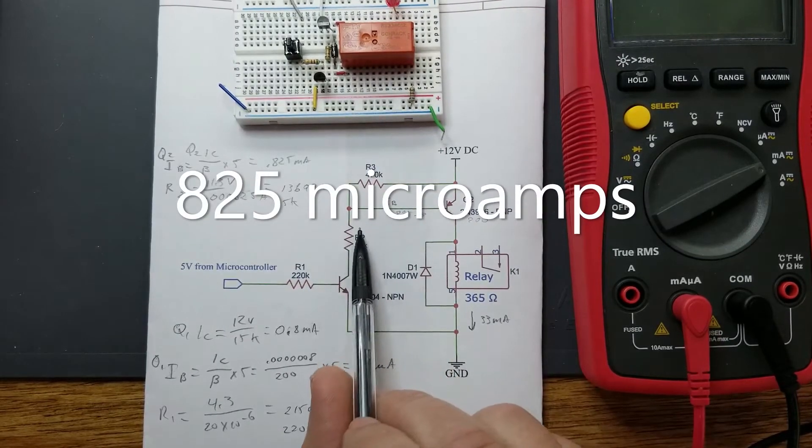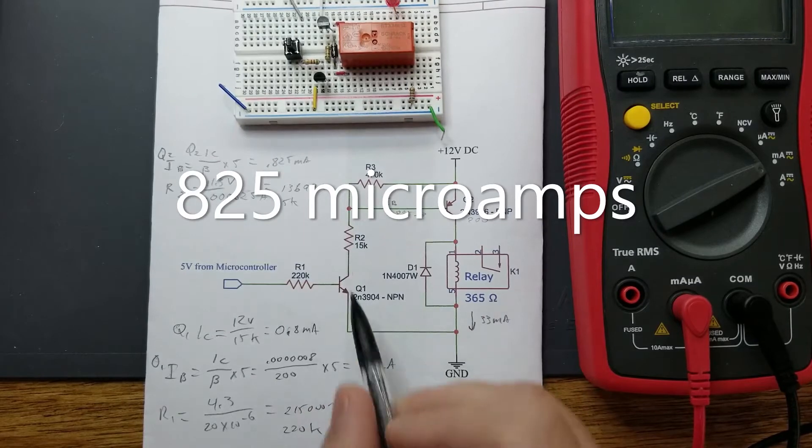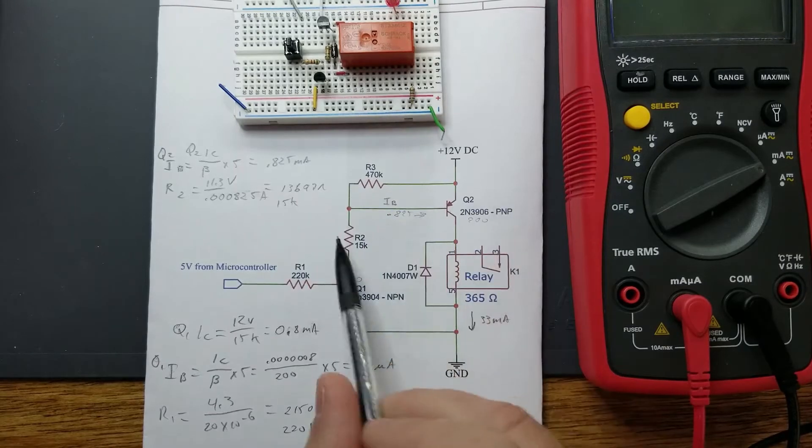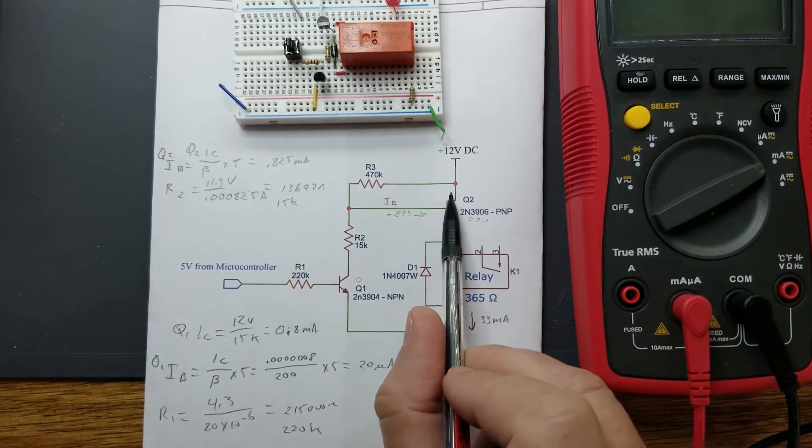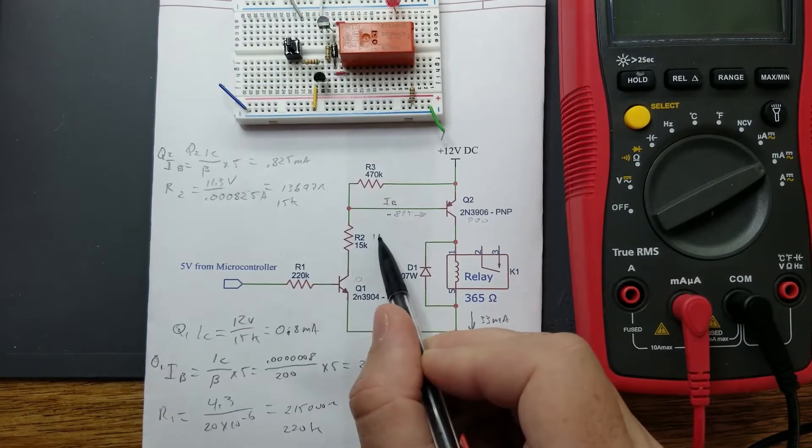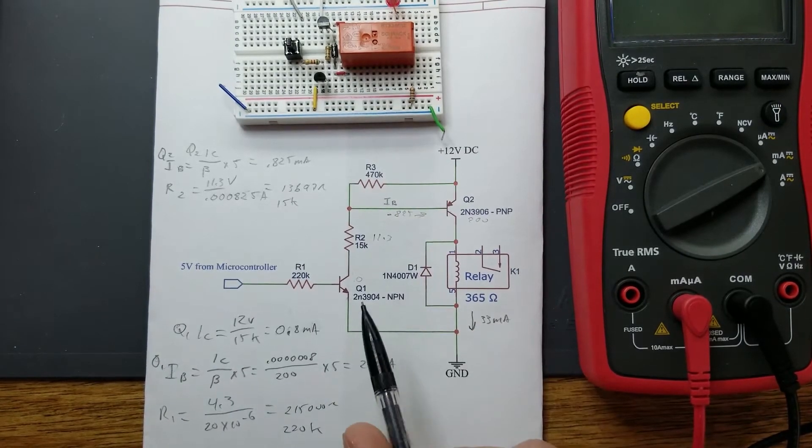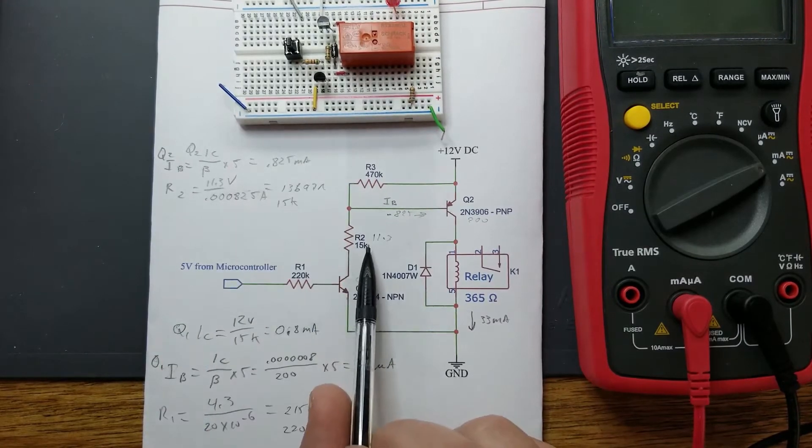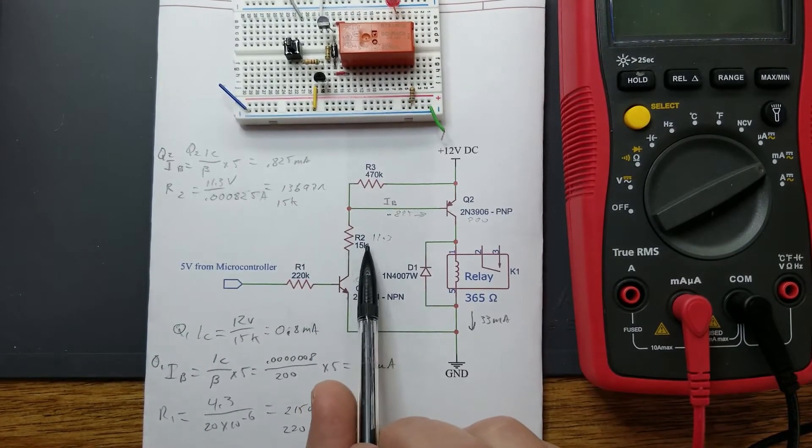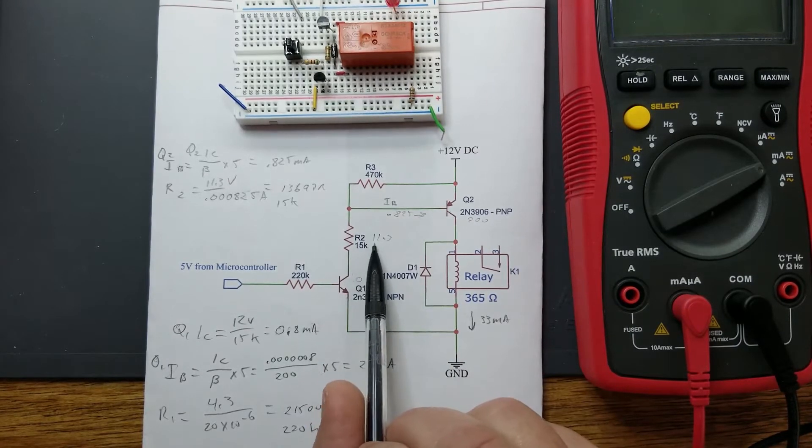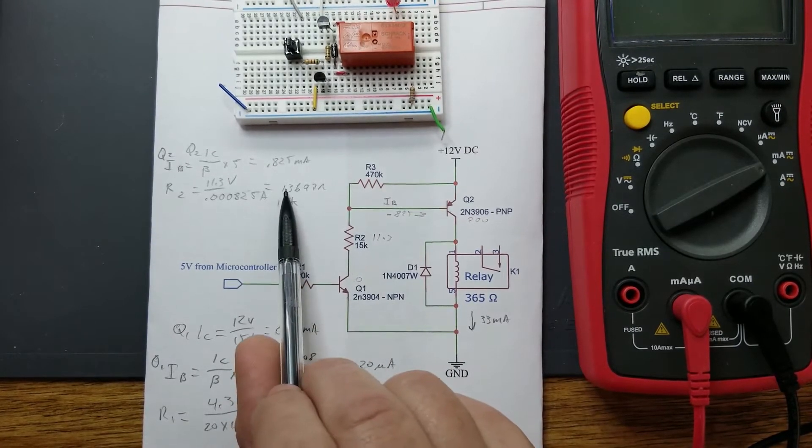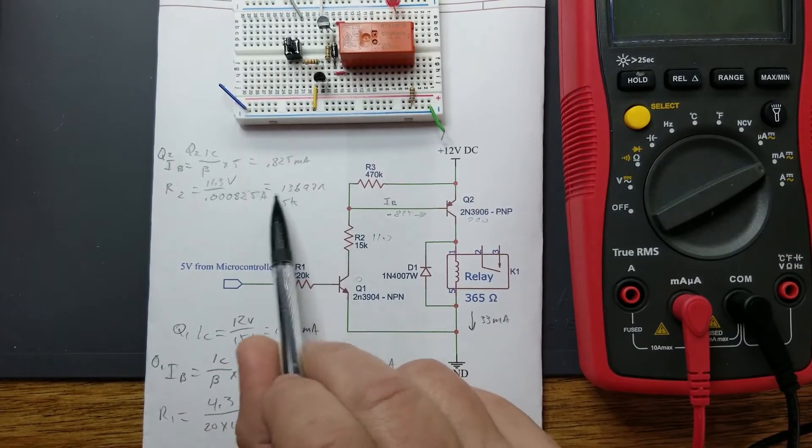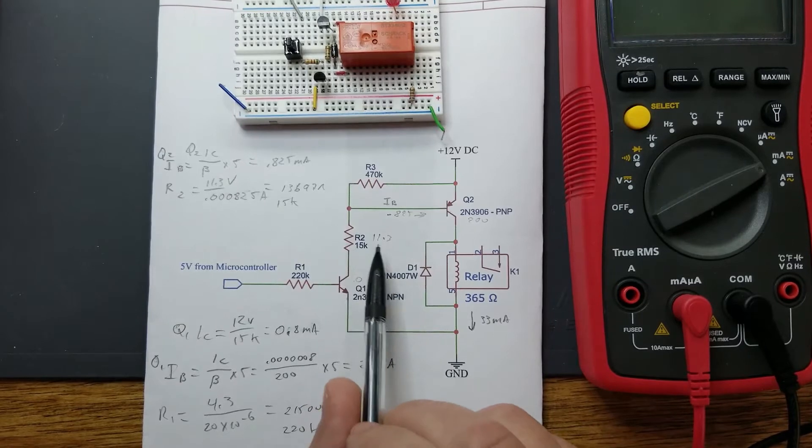That gives you 825 milliamps in order to turn this transistor on. When this transistor is on, it's going to be approximately zero volts across here. You've got that PN junction right there, so you got to subtract 0.7, which gives you 11.3 volts across this resistor. You divide that by the current, and that gives you an approximate resistor value that is needed to drive this into saturation. That resistor value comes out to 13,697 ohms. A fairly close standard value is going to be 15k.